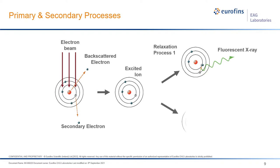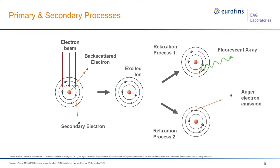Another relaxation process is Auger electron emission, where an outer shell electron drops in but instead of creating an x-ray, another outer shell electron is emitted, leaving the atom doubly ionized. This Auger electron is useful as a technique in its own right, though not necessarily in SEM. Other secondary events include inelastically scattered electrons and Bremsstrahlung radiation, which we are not going to examine here.